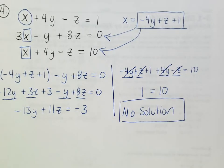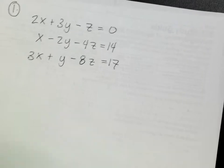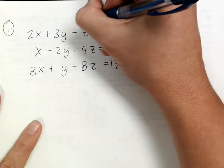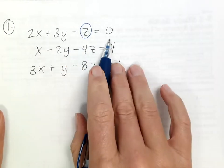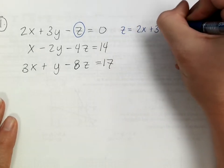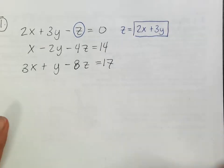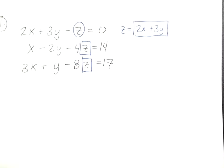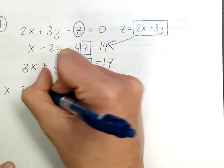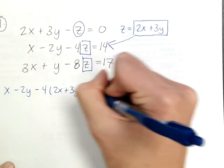The last problem comes from the 3-4 study guide, question 1. Again, 3 equations with all 3 variables. I choose to solve for z in one equation because it's an easy move — just adding z to one side gives z = 2x + 3y. I'll plug this into both other equations.